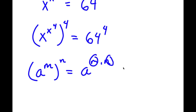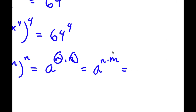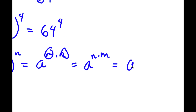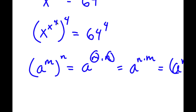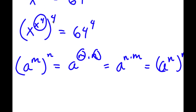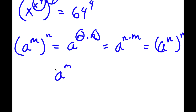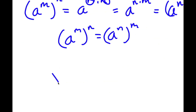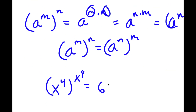And m and n — you can actually switch the places of these two. So this is the same thing as a to the power of n times m, which means a to the power of m to the power of n equals a to the power of n to the power of m. We can think of x to the power of 4 as m and 4 as n. So x to the power of x to the power of 4, to the power of 4, equals x to the power of 4 to the power of x to the power of 4. And this equals 64 to the power of 4.